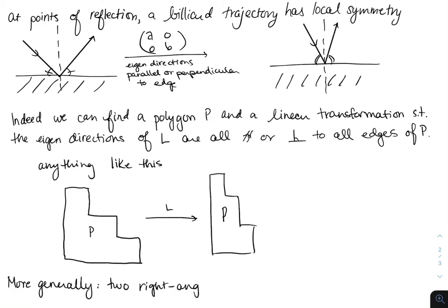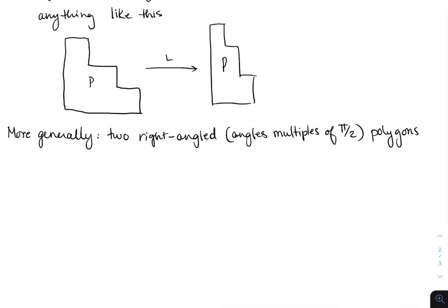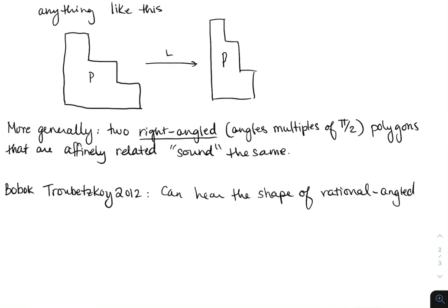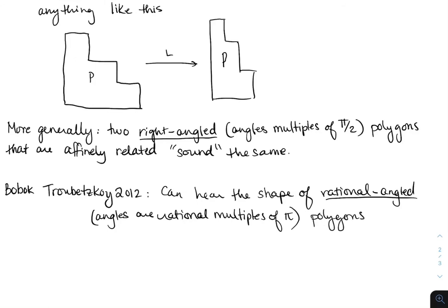So more generally, two right-angled polygons — right-angled meaning all angles are multiples of pi over 2 — that are affinely related sound the same, meaning they have the same bounce spectrum. So now we'll talk about previous results. In 2012, Babillot and Trubetskoy showed that you can hear the shape of rational angled polygons — rational angled meaning all angles are rational multiples of pi. And the only exceptional case is the right-angled polygon case we saw above.